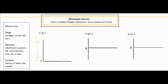Now let's take a look at the different types of shapes you might see. If you see a flat line on your graph, that means the object is not moving at all — it's at rest. So if the line is flat anywhere along the graph, the position stays constant, which means the object isn't moving at all.